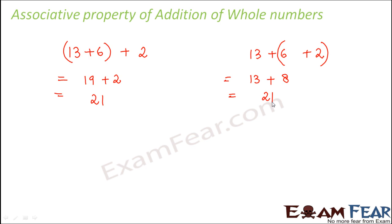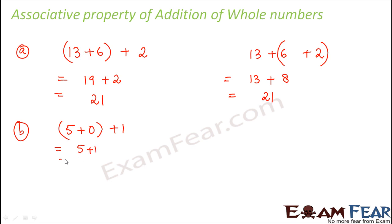So when we have to add three numbers, whether we add the first two numbers first and then add the sum to the third, or we add the second and third numbers first and then add their sum to the first, in both cases we get the same result. Let us take one more example to verify this. Let us consider three numbers 5, 0 and 1. The result here would be 5 plus 1 which equals 6, and performing it in a different way gives the same result.